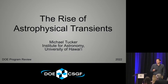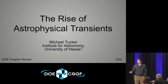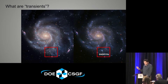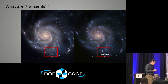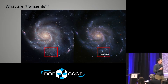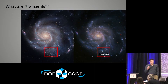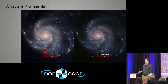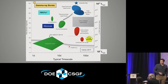Transients don't have a good definition, at least not in the sense that exoplanets or galaxies do. But generally, transients are things that experience extreme brightness variations on short time scales. And of course, the one you've probably heard of are supernovae. Here's an example of supernova 2011 FE exploding in M101. But it's actually a much more diverse class of objects.